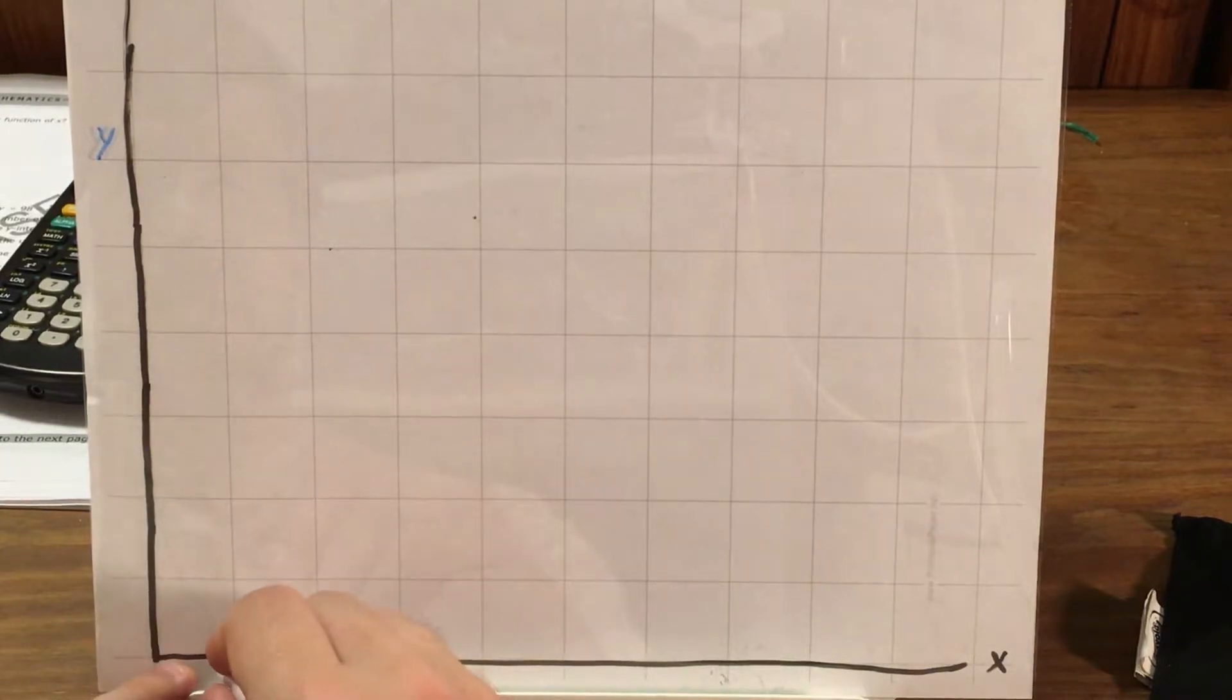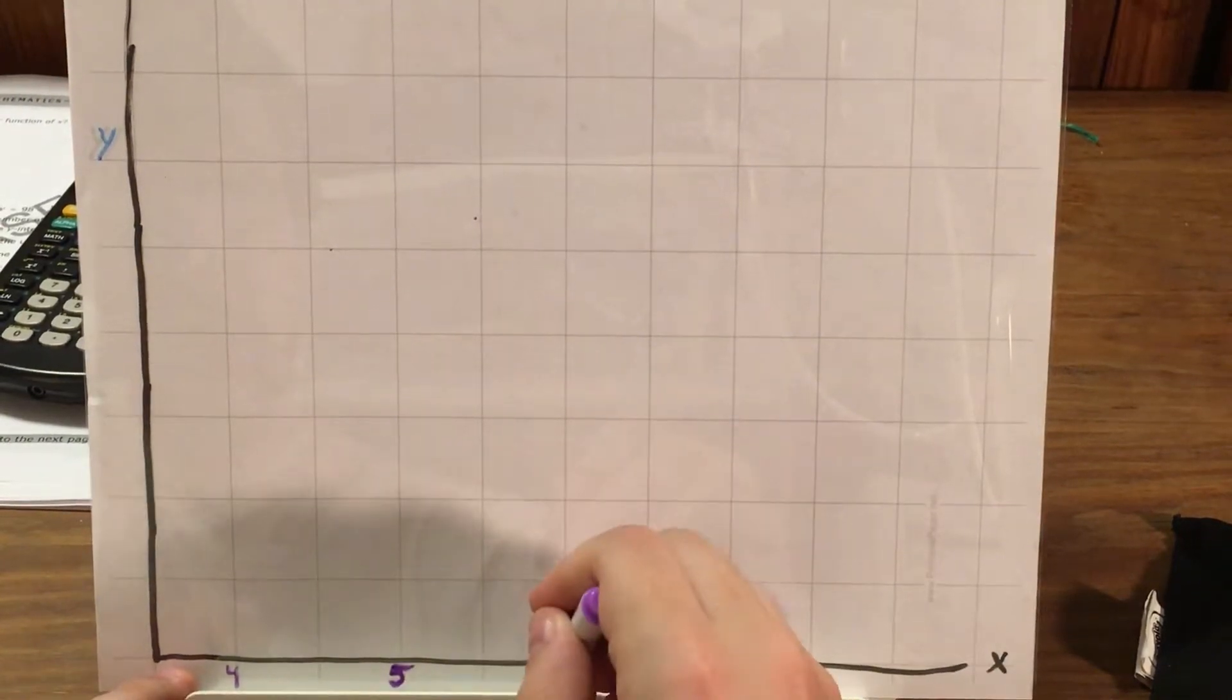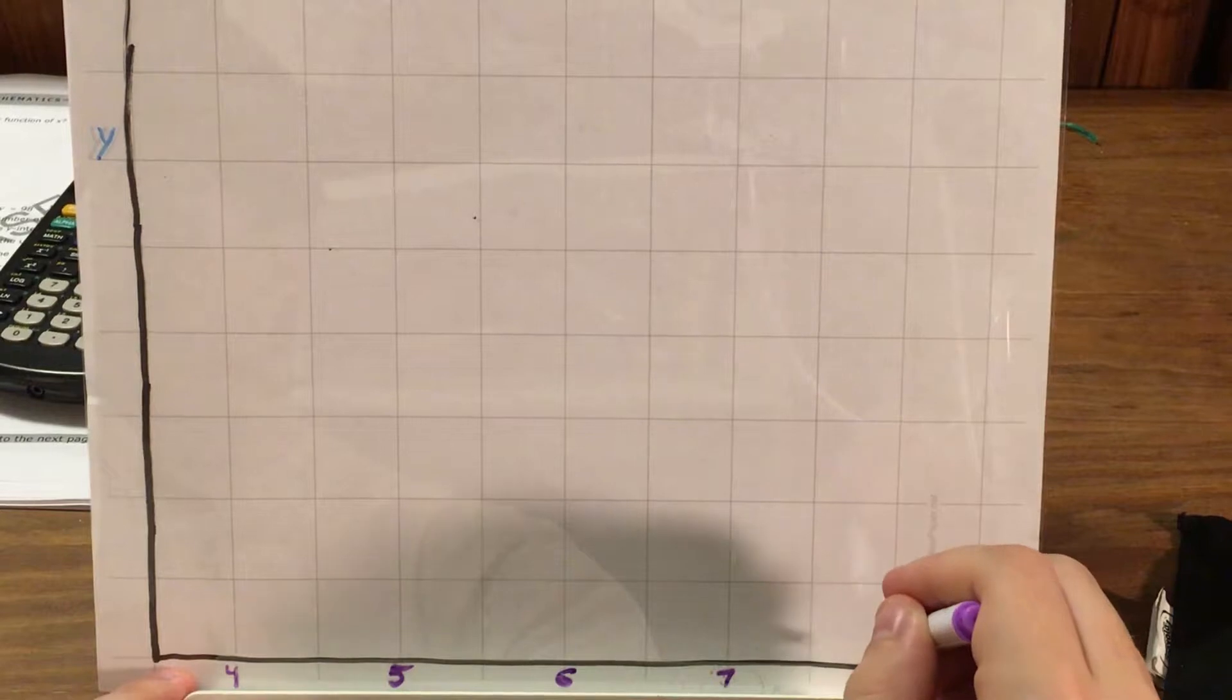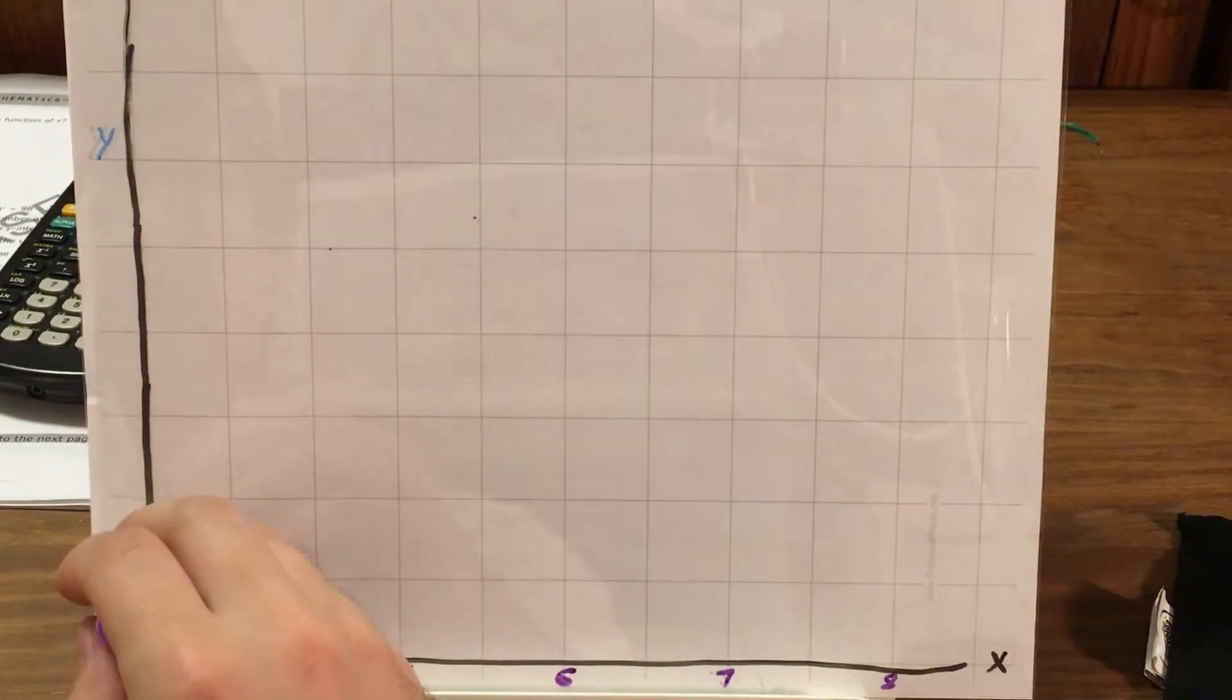So if this were 4 p.m., 5, 6, 7, and 8 p.m., and let's say that each of these squares is 200 calories.